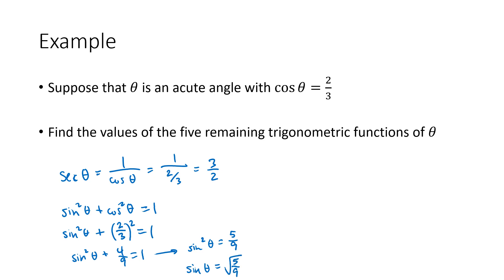Normally when we take the square root of both sides of an equation, we have to worry about the possibility that our solution is negative — we get a plus or minus. But we don't have to worry about that here because all of our trig functions of acute angles are positive, since they are ratios of lengths and lengths are positive. To simplify the square root of five ninths, we can write that as the square root of five divided by the square root of nine, which is the square root of five divided by three.